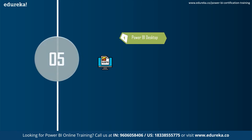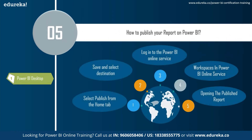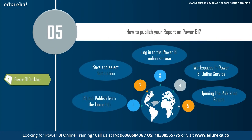The next question is: how do you publish your report on Power BI? There are five steps. First, select Publish from the Home tab. Then save and select the destination workspace. After that, log into the Power BI online service, open the workspace where you saved it, and finally open the published report.